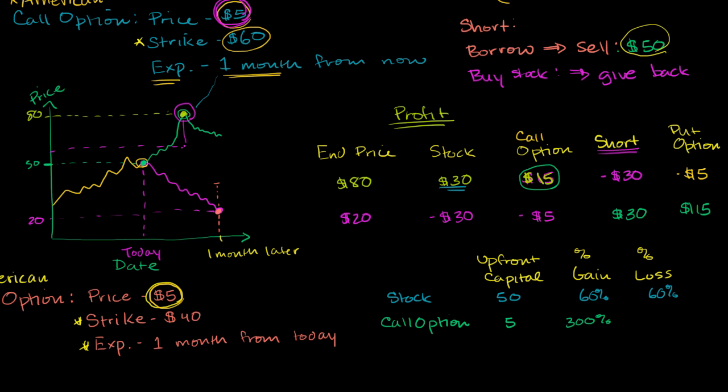On the other side though, if the stock went down, we had no reason to actually exercise our option. So we essentially just lost all of the money of the option, so we lost 100%.